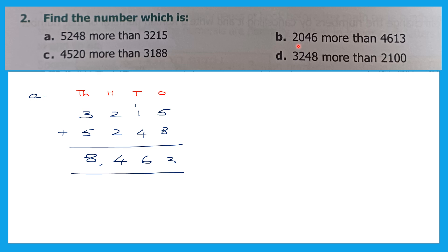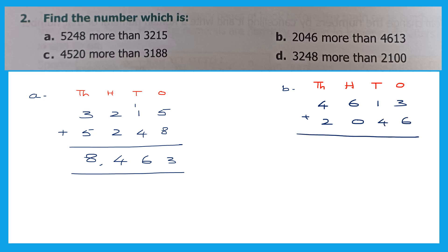Now question B: find the number which is 2,046 more than this number. Write the places: ones, tens, hundreds, thousands. Write 4,613 plus 2,046. 3 plus 6 is 9. 1 plus 4 is 5. 6 plus 0 is 6. And 4 plus 2 is 6. The answer is 6,659. So when you add 2,046 more than 4,613, you get 6,659.